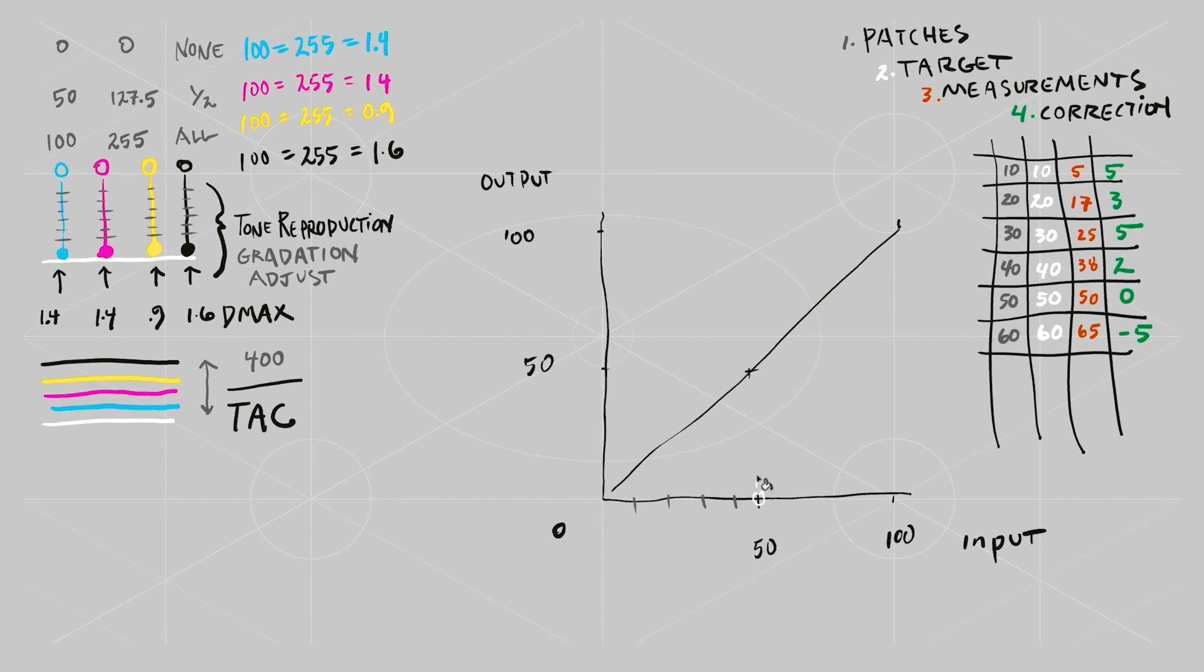Along the bottom, the input values. Up the side, the output values. Zero is in the lower left, 100% in the corners.